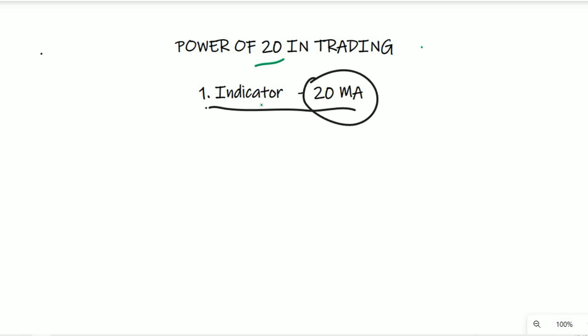The number in trading is a very important number. SMA means Simple Moving Average and EMA means Exponential Moving Average.